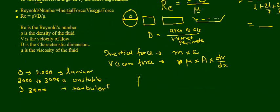Looking at the equation Re = ρVd/μ, as velocity keeps increasing, the Reynolds number keeps increasing. This gives us a relationship between velocity and Reynolds number. The particular velocity at which the flow changes from laminar to turbulent is known as critical velocity, denoted by Vc.